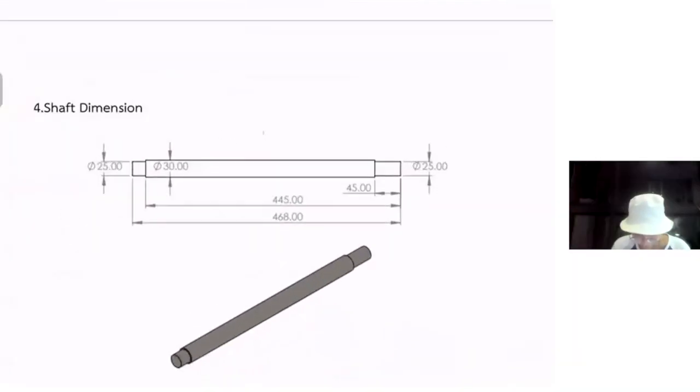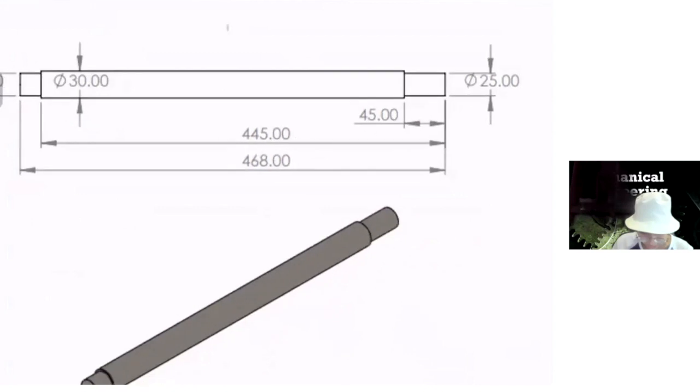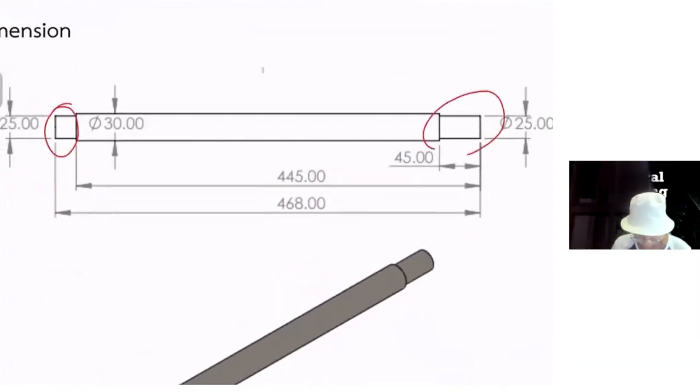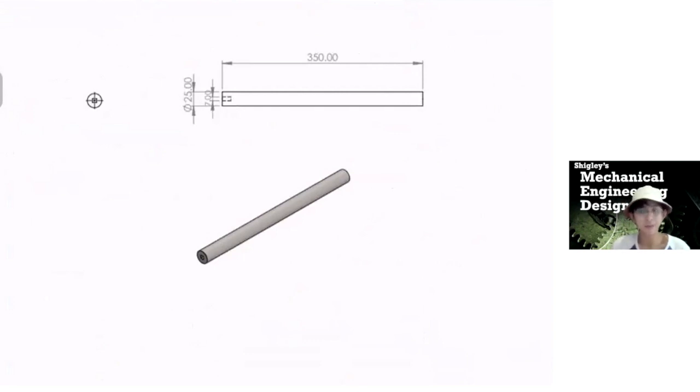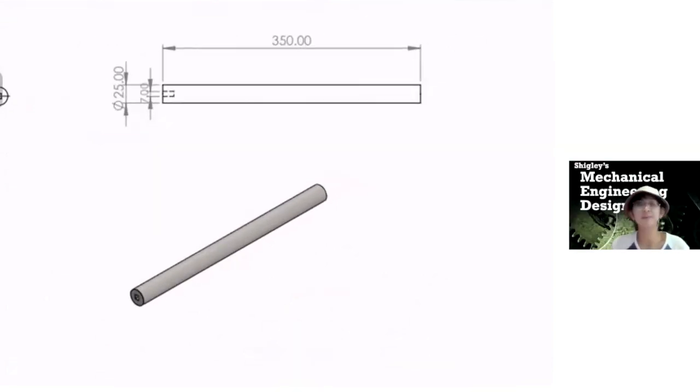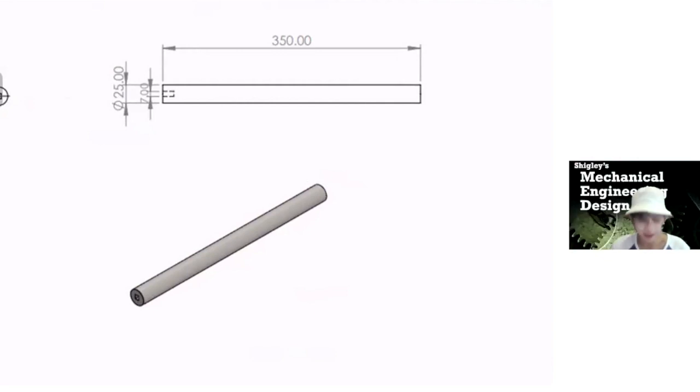This is the shaft dimension. It has a small diameter of 25 mm. And the big one is 30 mm at the center of the shaft. And it has a length about 468. We cut it to size, left and right. This is the smaller one, smaller shaft. It has a length of 350 mm and the diameter of 25 mm.